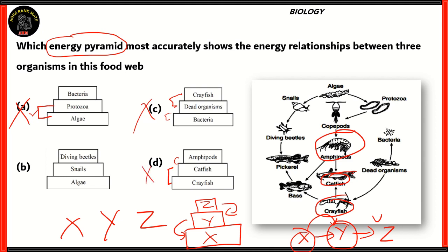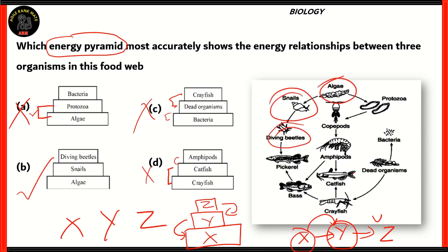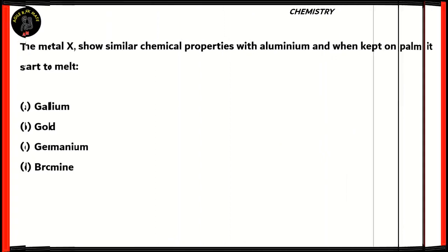Option B is the correct answer. We can see it highlights algae, snails, and diving beetles. The arrow is pointing to snails, which means algae is being eaten by snails; and the arrow is pointing to diving beetles, which means snails are being eaten by diving beetles. So option B is the correct answer for this question.